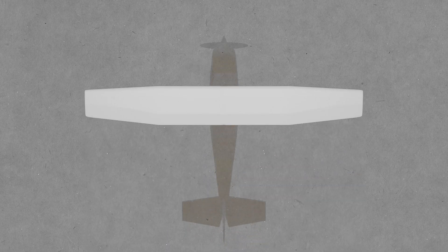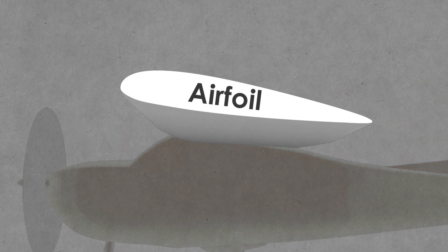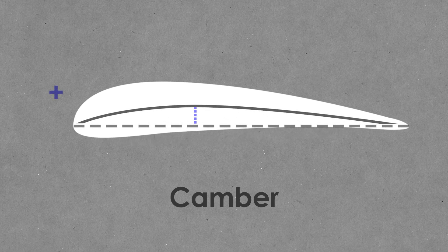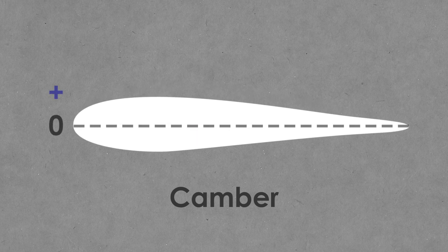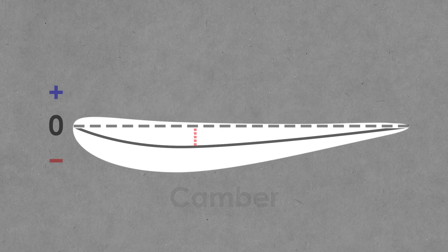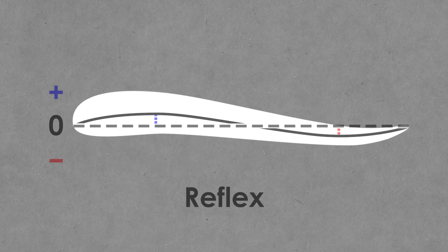First, some quick terminology. This entire structure is the wing. In the cross section — the shape we see when we slice through it — is called the airfoil. The camber of the airfoil is essentially a measure of its curve. This is positive camber, this is zero camber, and this is negative camber if you're into that. And if an airfoil goes from positive to negative camber, it's called a reflux airfoil, but let's get back to the fun stuff.